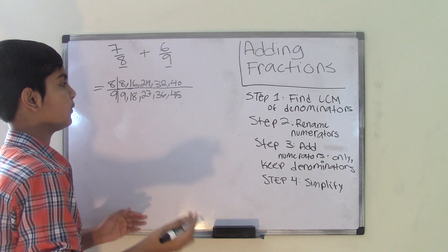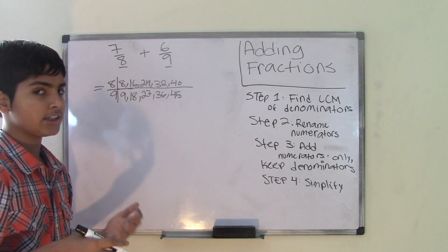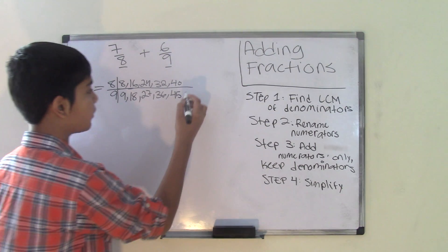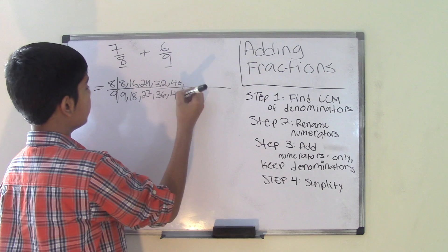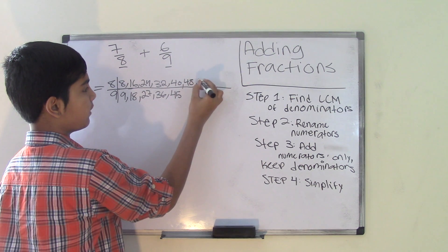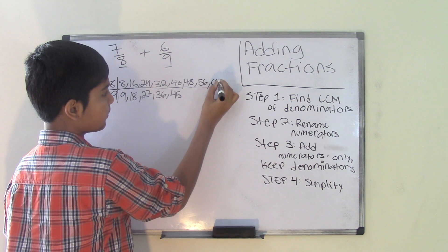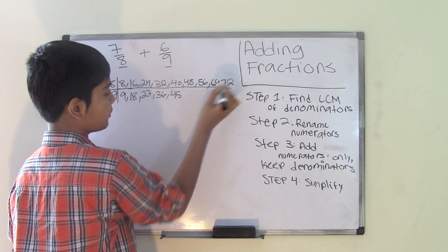We have listed 5 multiples for each number and we still didn't find any common multiple, so we have to keep on going. 8 times 6 is 48, 8 times 7 is 56, 8 times 8 is 64, and 8 times 9 is 72.